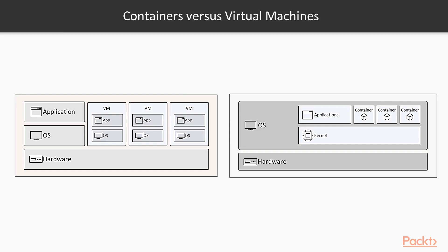What does it mean in practice? It means that virtual machines use shared hardware capacity, such as memory. Containers use shared operating system capacity, such as the kernel.